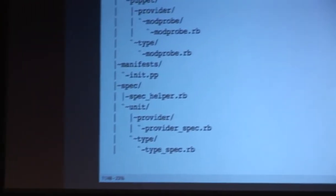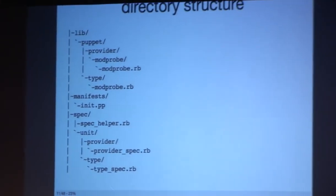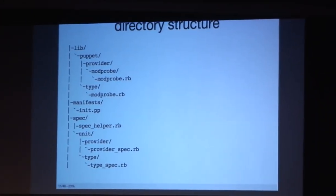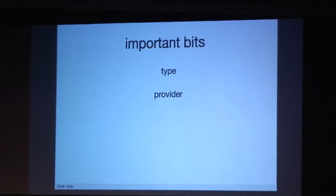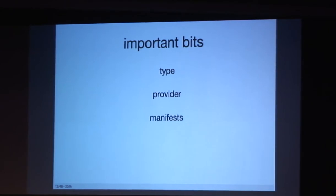So to start with, we'll just look at the overall directory structure. Pretty much like a normal Puppet module, except you'll notice that there is the provider and type. And I added the spec directory for tests, but we will not be talking about that today. So the important bits we are going to talk about are the resource type, the resource provider, the manifest, because you need to declare your resources, and we won't be talking about tests.